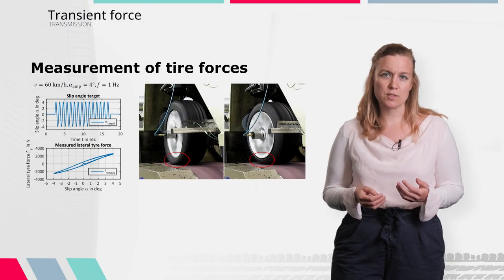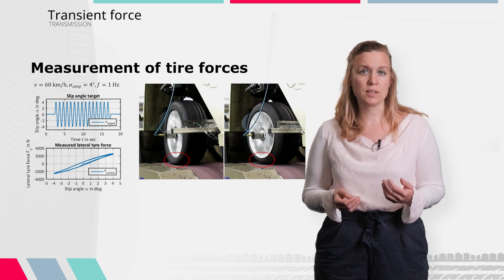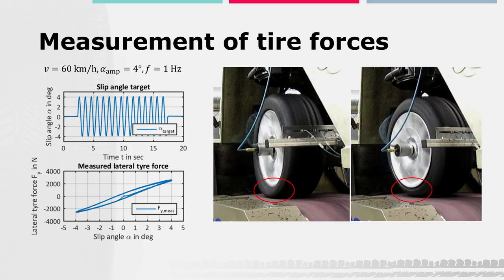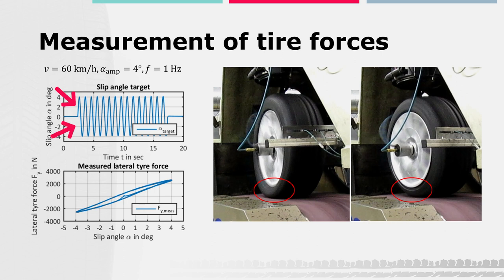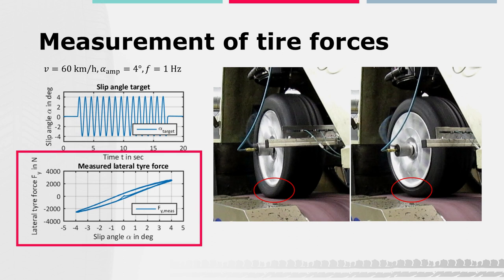For example, when we look at the measurement of lateral tire forces on a test rig, as depicted here on the right side, we can see that depending on the tire slip angle, quite large deformations of the whole tire structure occur. Additionally, looking at the measurement results here on the left side, the slip angle alpha is changed harmonically within plus and minus 4 degrees at a frequency of 1 Hz and a travelling velocity of 60 km per hour. When we look at the measured lateral force with respect to the slip angle, we can see a distinct hysteresis behavior.